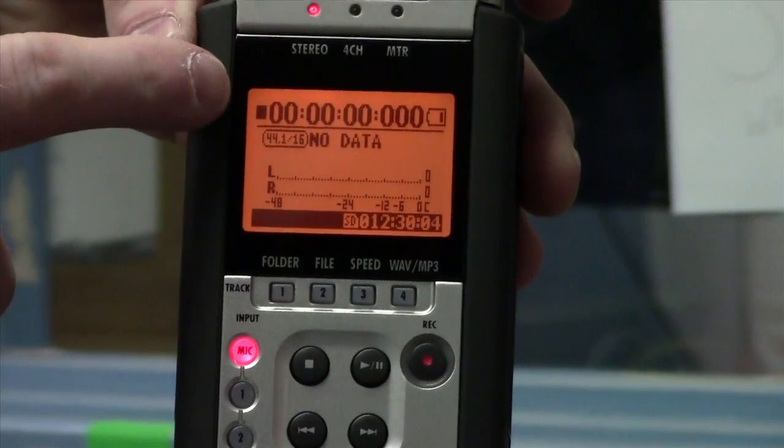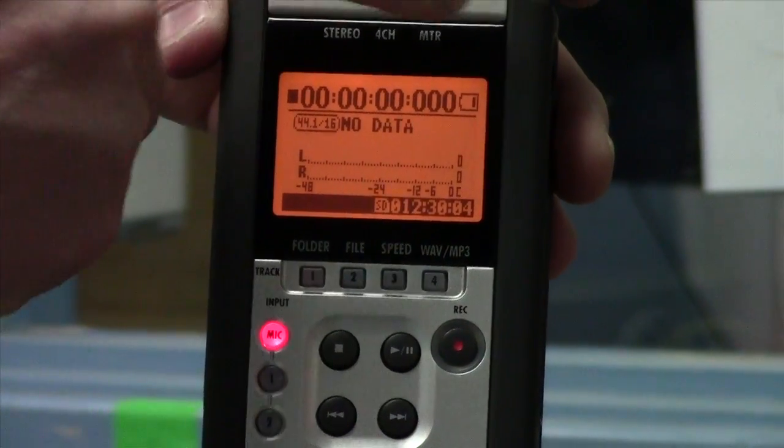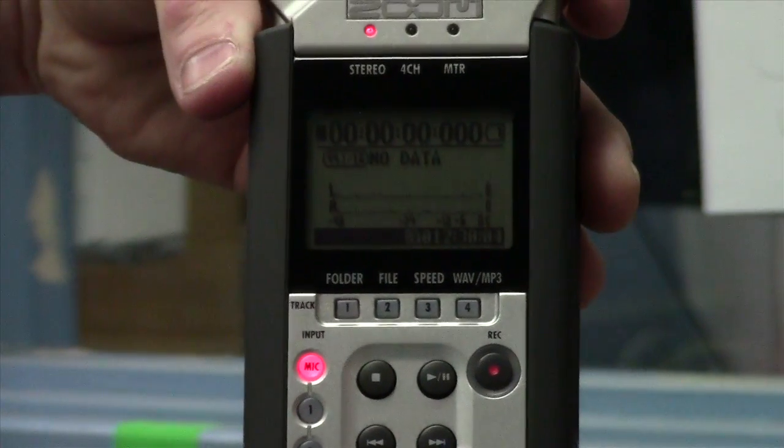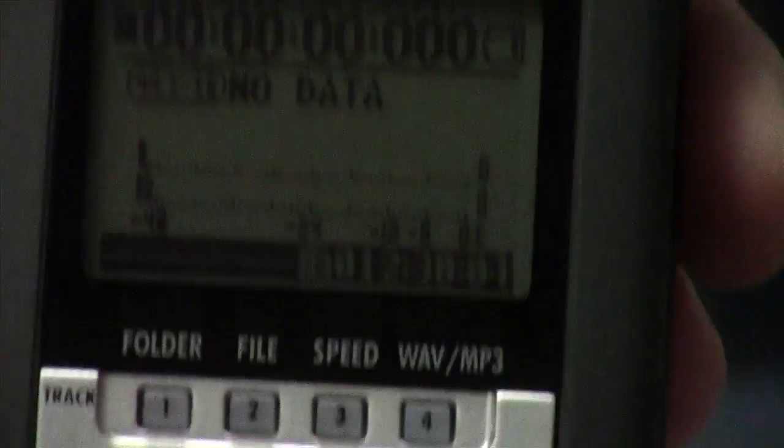So on here you'll notice that there's a zero counter right now. There's a battery life indicator. Batteries are low right now. It should get us through this but if you're recording a show you definitely want to replace the batteries.